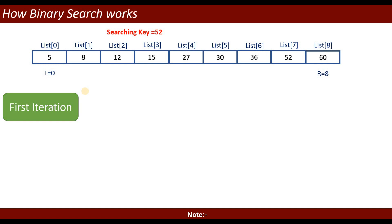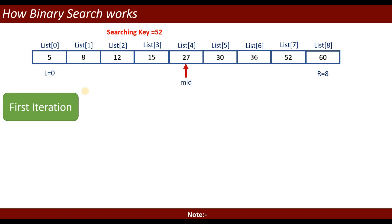In the first iteration, left is on index zero and right is on index eight. We calculate mid equal to left plus right divided by 2 — floor of 0 plus 8 is 4. The element at index 4 is 27, so mid points to 27. Now it checks: is 52 equal to 27?